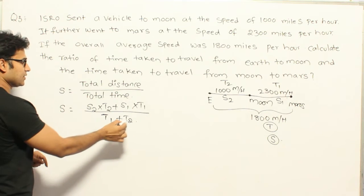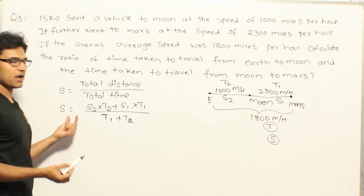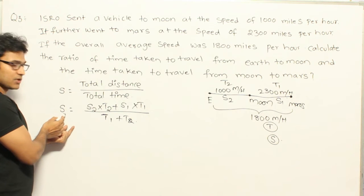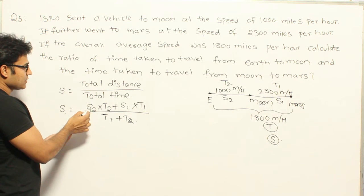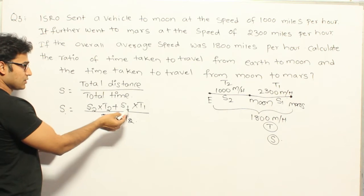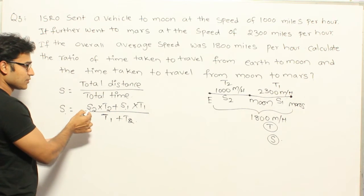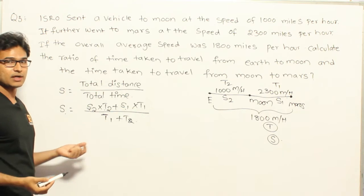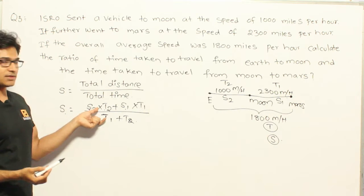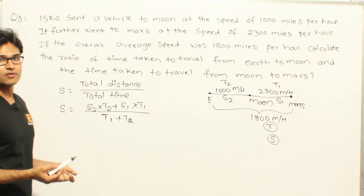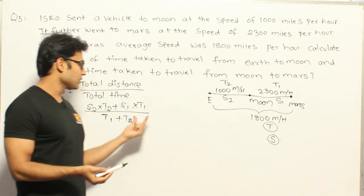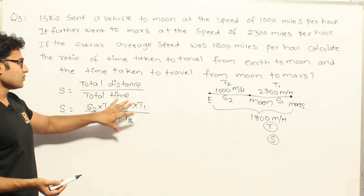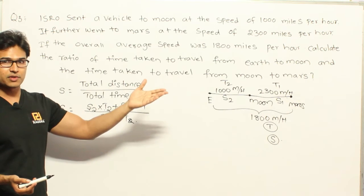If you observe this formula, it is in the form of averages. If you consider it as the average speed, then S2 is the average for the first group and S1 is the average for the second group. T1 and T2 can be thought of as N1 and N2. They are asking for the relationship between T1 and T2.